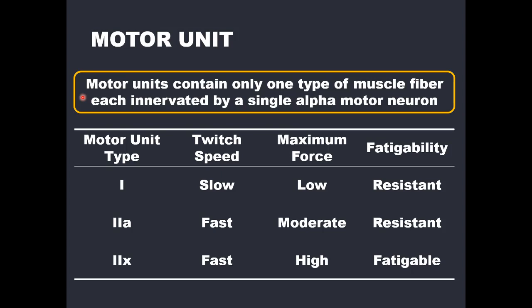We know that there are generally three types of muscle fibers, although more recent research has identified other types. To keep it simple, let's stick with the three known types: type 1, type 2a, and type 2x. Oftentimes you will see the 2x described as 2b — in human muscle, this is incorrect; it is 2x. A type 1 motor unit is a single alpha motor neuron innervating type 1 muscle fibers, and so on.